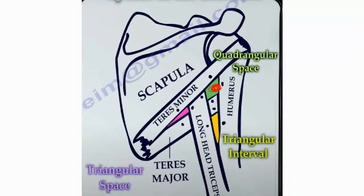In quadrangular space syndrome, the axillary nerve is affected because the axillary nerve and the posterior humeral circumflex artery pass through the quadrangular space.